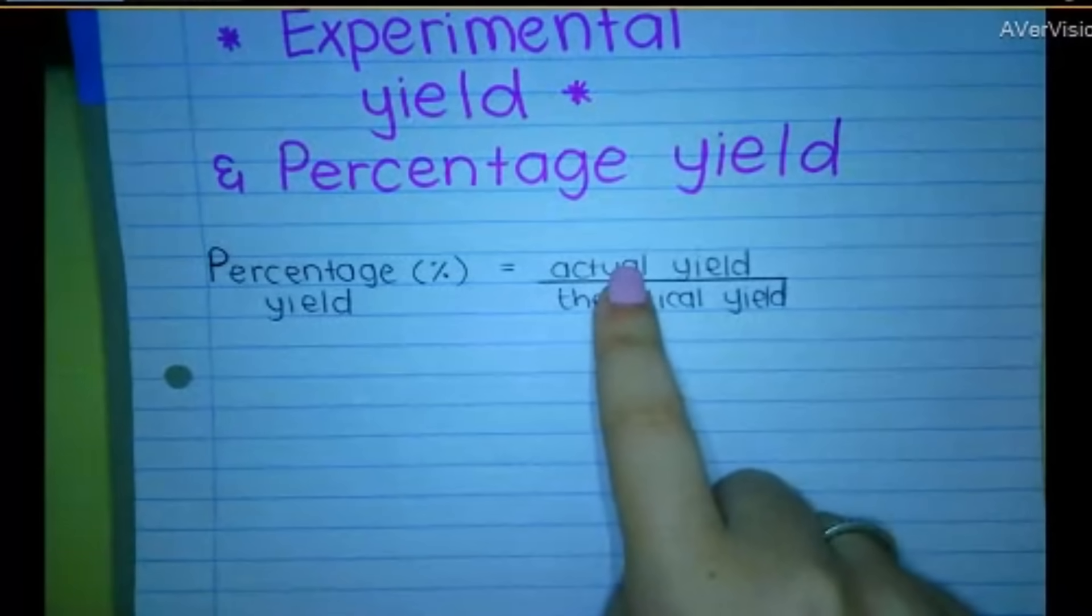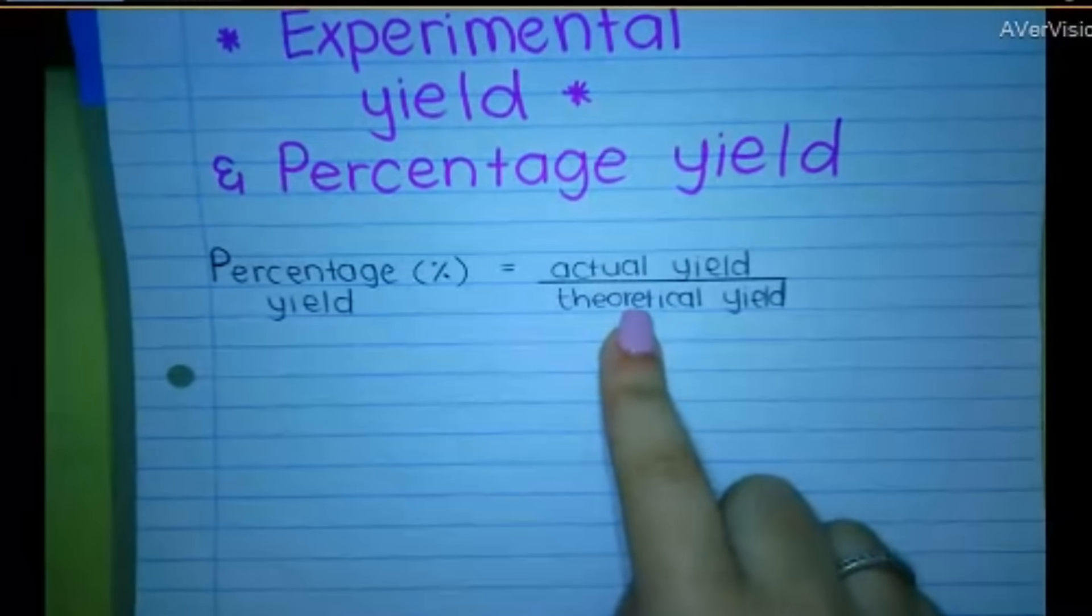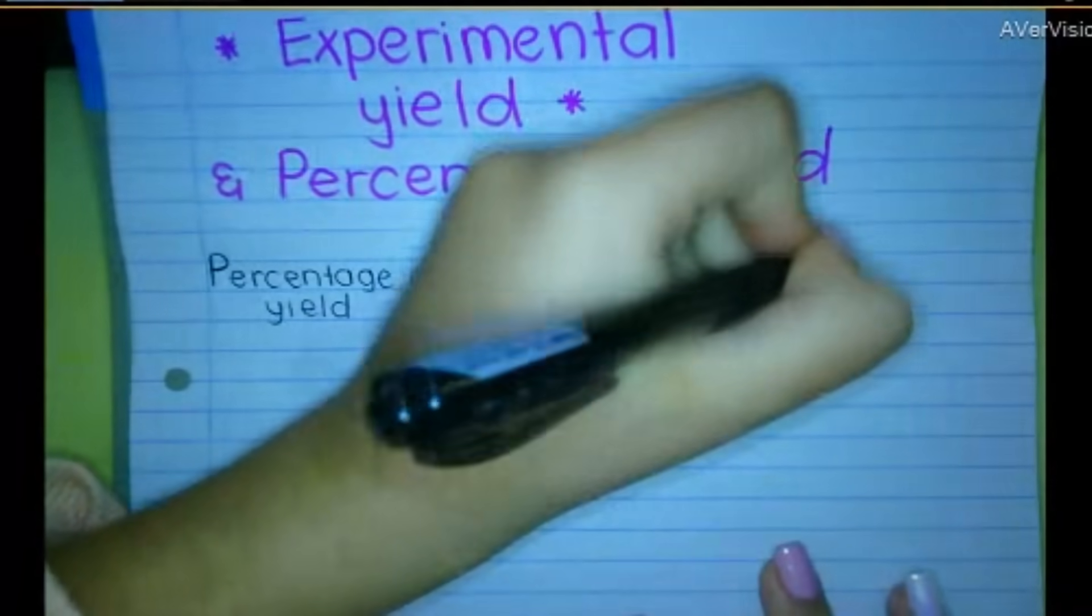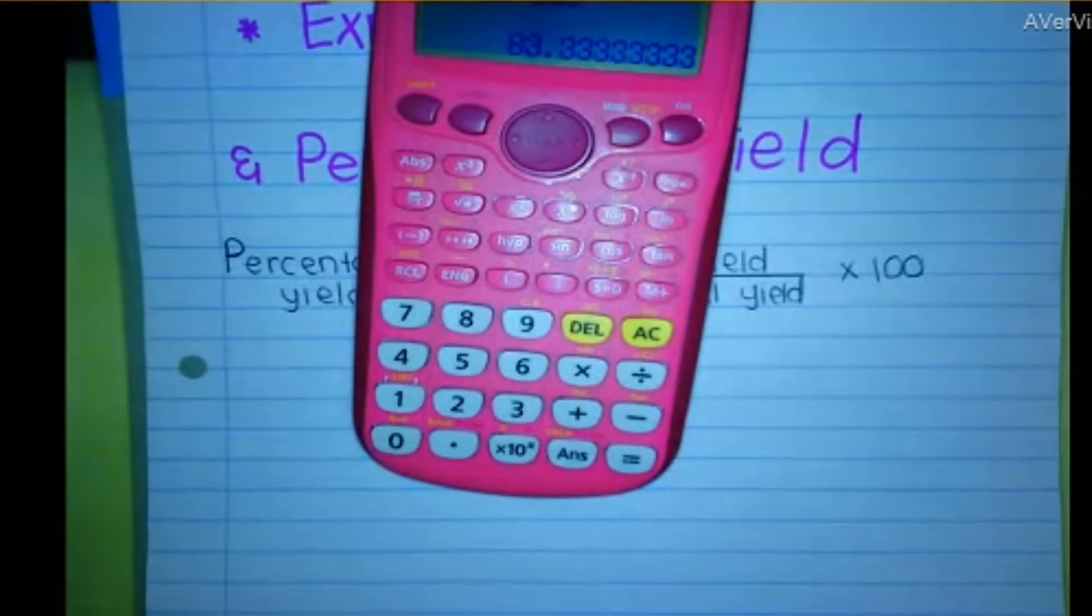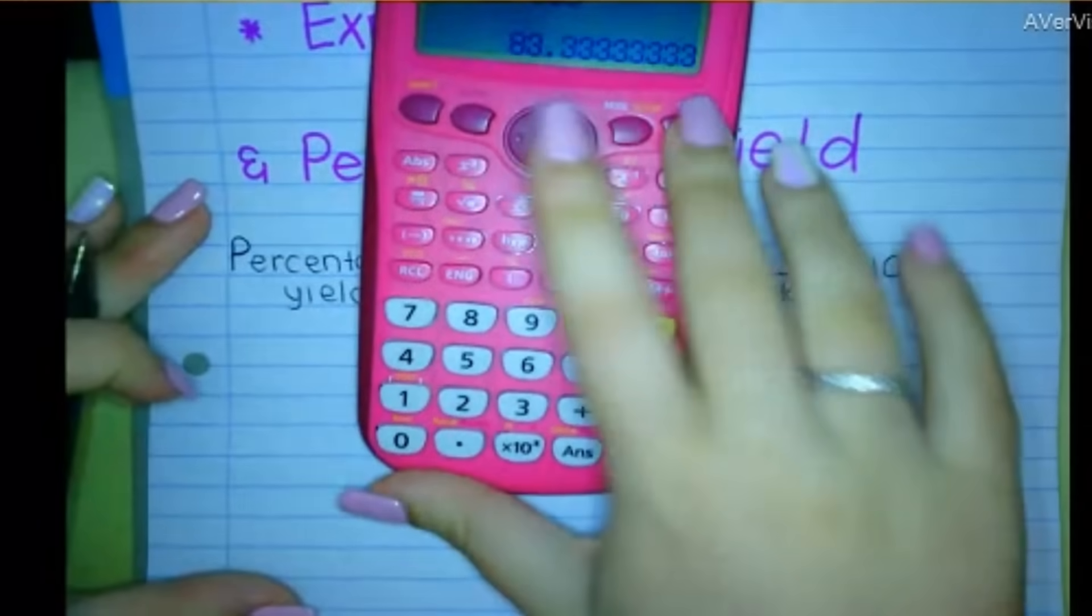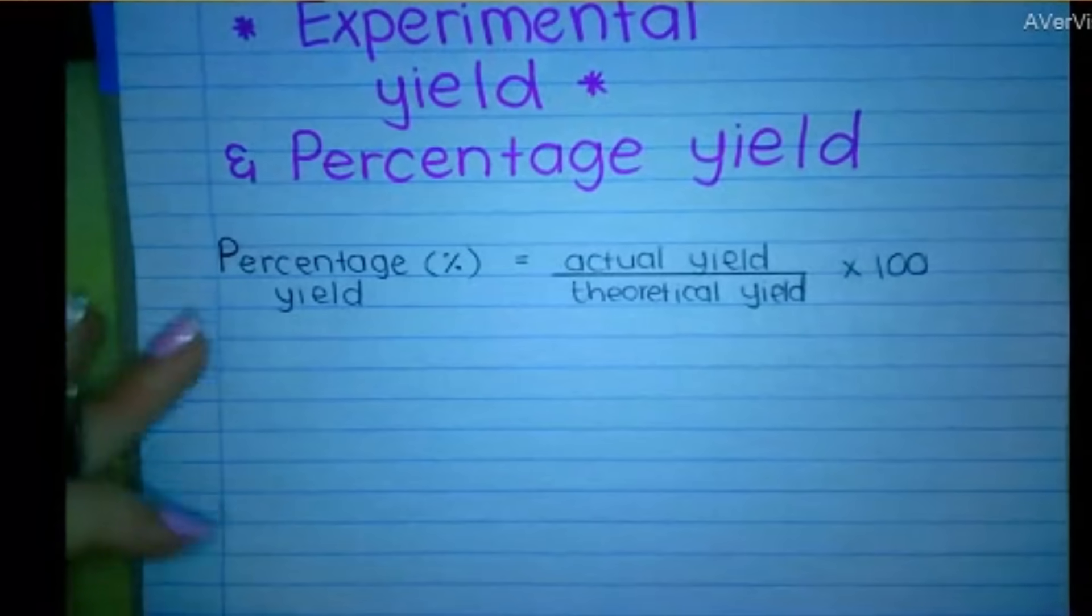Then we can work out the percentage yield. So I actually got 25. I was supposed to get 30 or theoretically I should have gotten 30, according to the chemistry. So 25 divided by 30 multiplied by 100. I've got an 83.33% yield, which is actually really good.